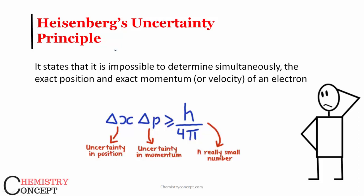The principle says it is impossible to determine simultaneously the exact position and exact momentum or velocity of an electron inside an atom.